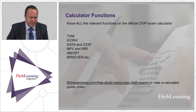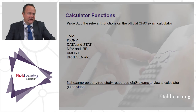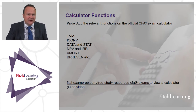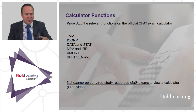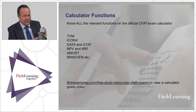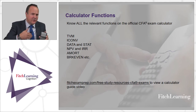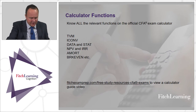To clear the cash flow worksheet, hit the CF button to enter it, then press second and then clear work — the clear work button is the bottom-left button. You have to press that once you're already in the worksheet: cash flow first, then press that.